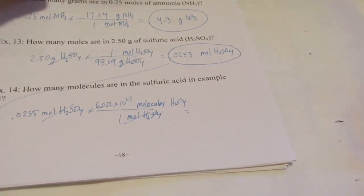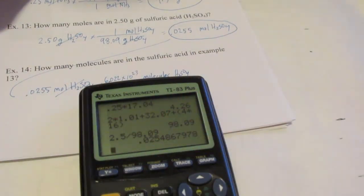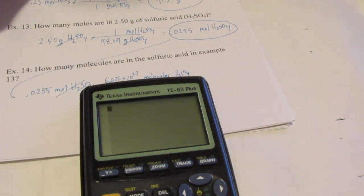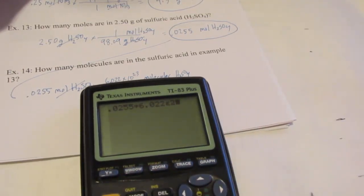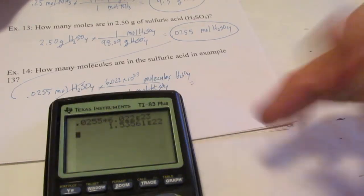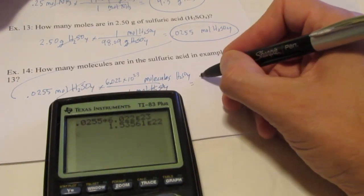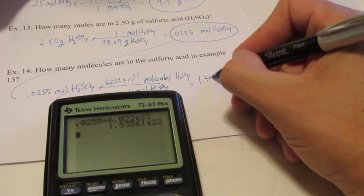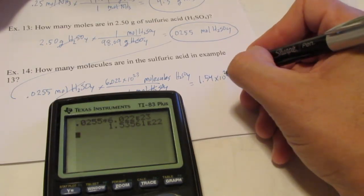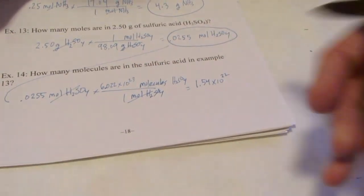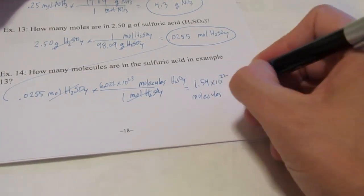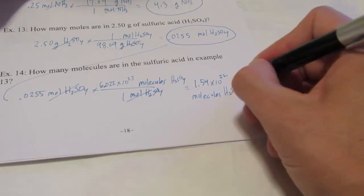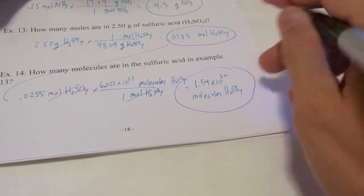Now, since that's on top, we're going to multiply by it. So let's clear this out. 0.0255 times 6.022, second EE to the 23rd, enter. Looks like we have three significant figures, 1.54 times 10 to the 22nd molecules of H2SO4.